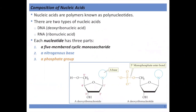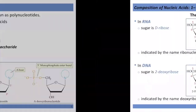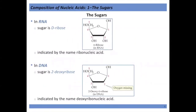When we talk about nucleic acids, these are polymers also known as polynucleotides. There are two types: deoxyribonucleic acids and ribonucleic acids. Each nucleotide has three parts: a five-membered cyclic monosaccharide (a sugar), a nitrogenous base, and a phosphate group. Let's start with the composition of the sugar.